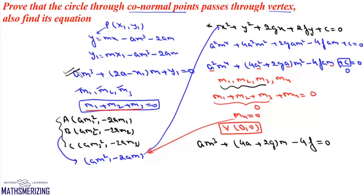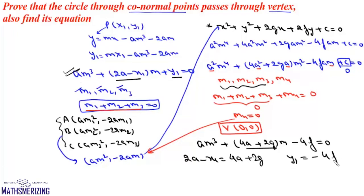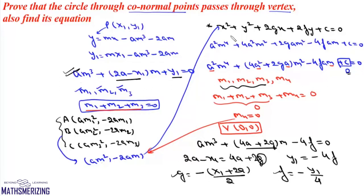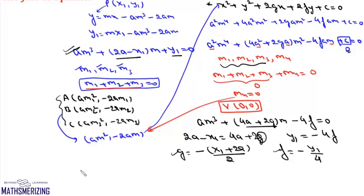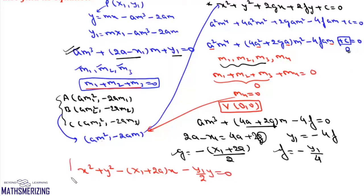Comparing this cubic equation with am³ + (2a - x1)m + y1 = 0, we get 2a - x1 = 4a + 2g and y1 = -4f. From these, g = -(x1 + 2a)/2 and f = -y1/4. With c = 0, the equation of the circle through the three co-normal points is: x² + y² - (x1 + 2a)x - (y1/2)y = 0.